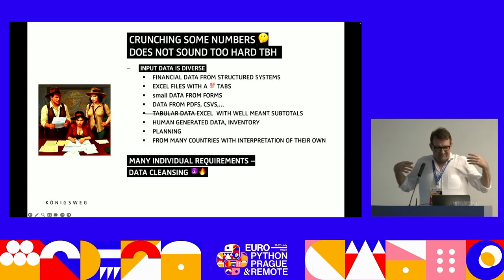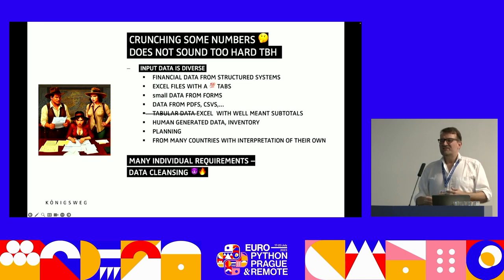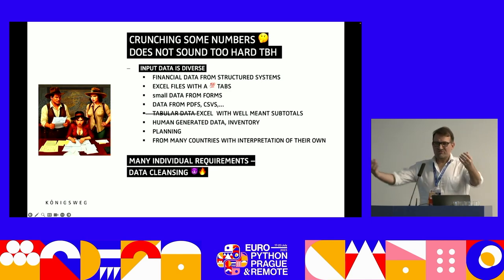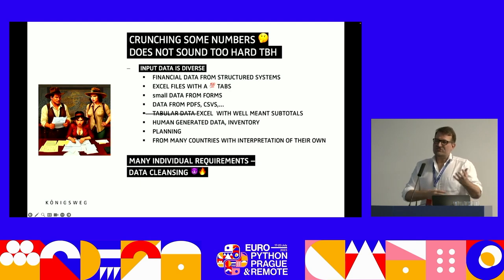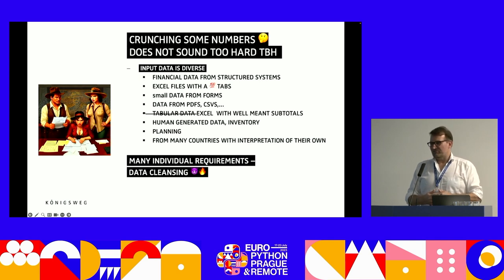On one hand, crunching numbers doesn't sound that hard. But there is a lot of financial data from structured systems — tons of Excel sheets, and in some companies thousands of different reports. These reports are made by systems and people, and people often want to make them visually appealing for their superiors, which means the structure changes frequently. There's no quality process or pre-definition of how reports have to look.